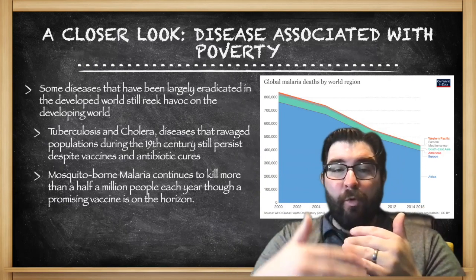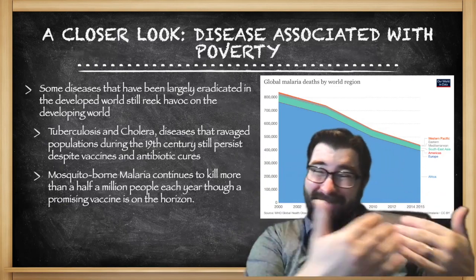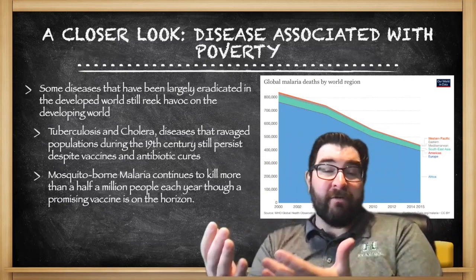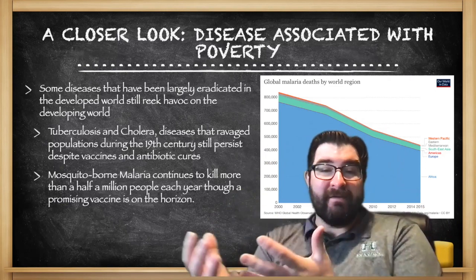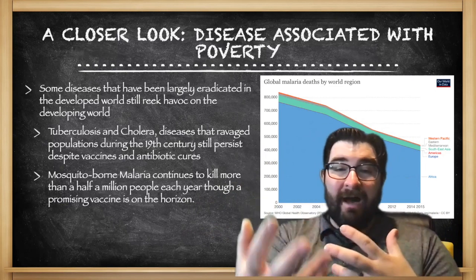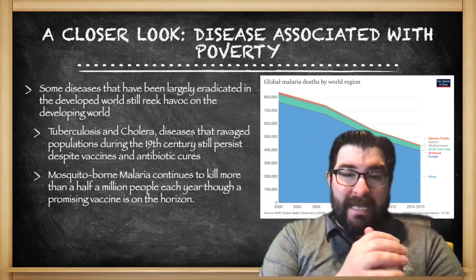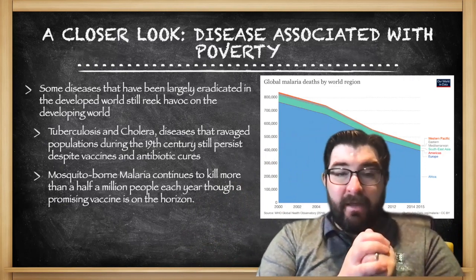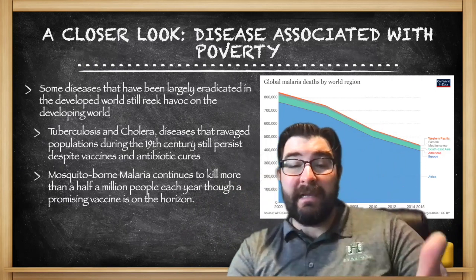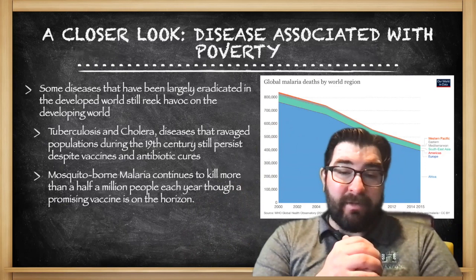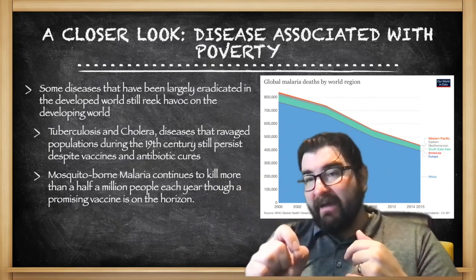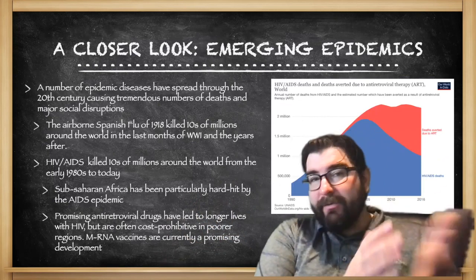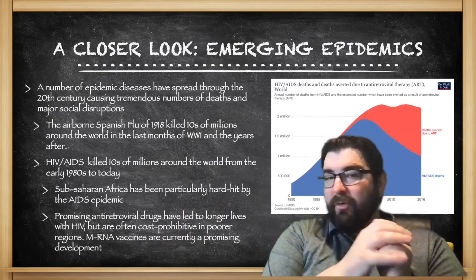Diseases associated with poverty are largely in the developing world. Diseases that were gotten rid of in the developed world are still wreaking havoc in poorer parts of the world, like sub-Saharan Africa and South Asia. Tuberculosis and cholera, diseases that ravaged populations in the 19th century, still persist despite vaccines and antibiotic cures. Mosquito-borne sicknesses like malaria continue to kill more than half a million people each year in Africa, even though a promising vaccine is on the horizon.